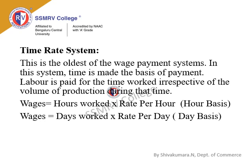Time Rate System: This is the oldest of the wage payment systems. In this system, time is made the basis of payment — labor is paid for the time worked, irrespective of the volume of production during that period. Wages = Hours worked × Rate per hour (hourly basis), or Wages = Days worked × Rate per day (daily basis).